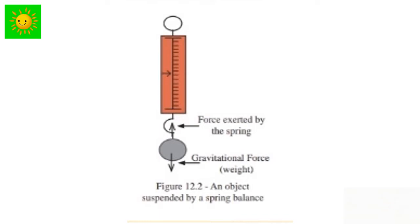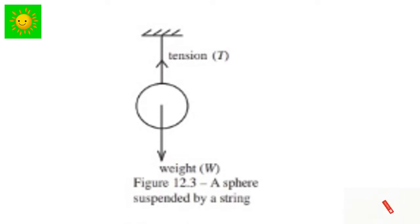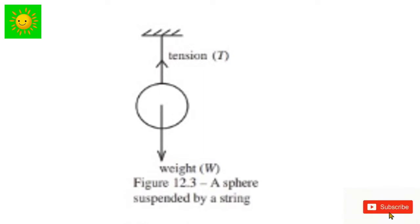This figure shows a sphere suspended by a string. The weight of the sphere acts vertically downwards. The sphere remains at rest as the vertically upward force applied by the string balances its weight. The sphere is in equilibrium under the downward force due to its weight — shown as W — and the upward tension in the string, shown as T.